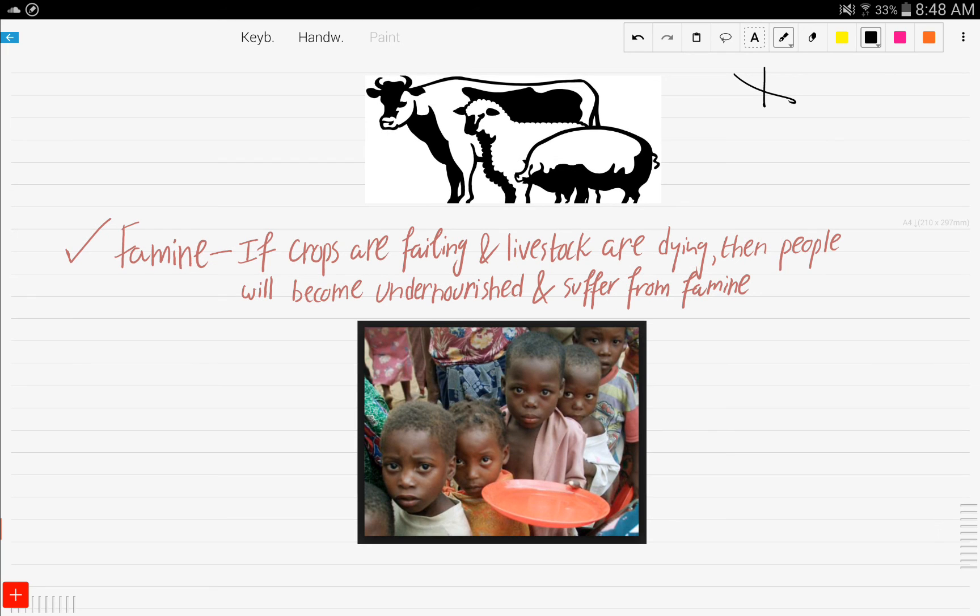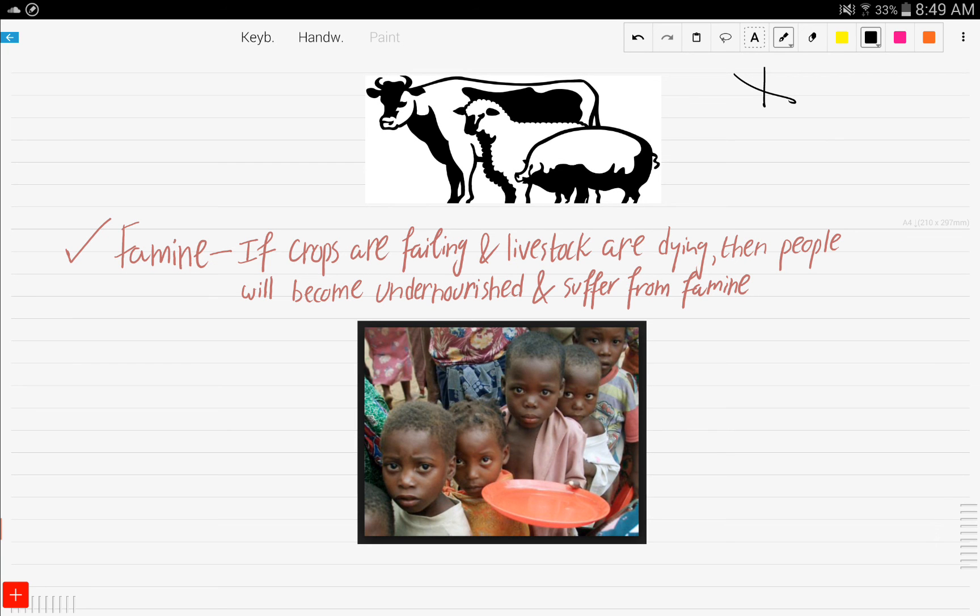The fourth and final implication of the shortage in supply of water is famine. If the crops are failing and the livestock are dying, then people will become undernourished and hence will suffer from famine.